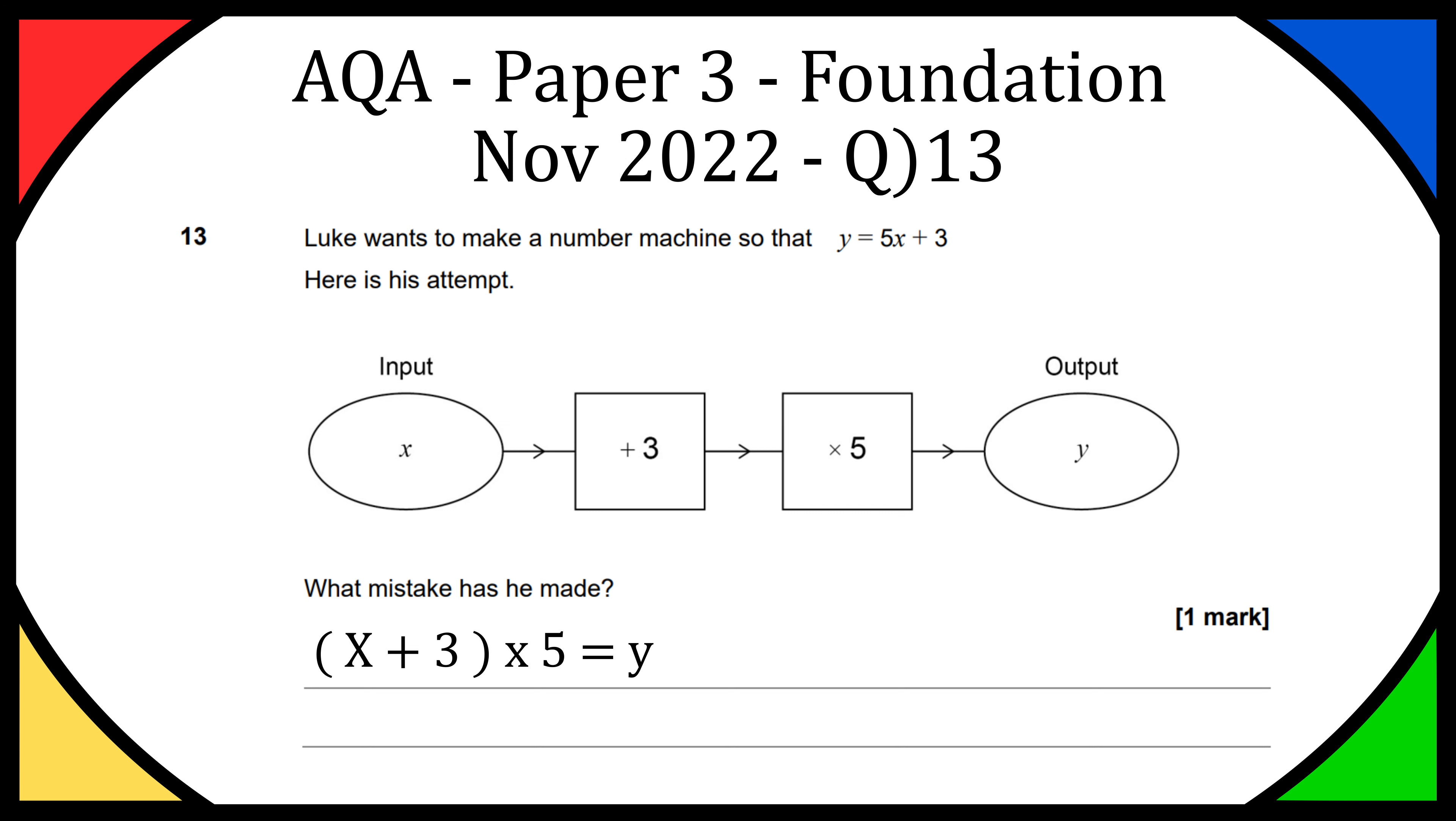You can also read it the other way around. Now we've got the formula, so we've got y is equal to (x plus 3) times 5, and as you can see, that is not the same as the original y equals 5x plus 3 which he was trying to create.